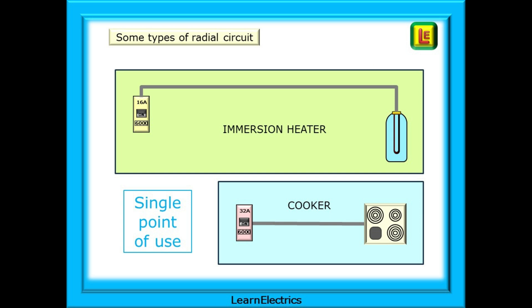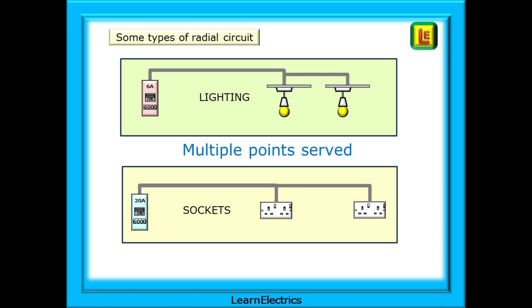An immersion heater circuit is a good example of a radial circuit. The wiring goes from its own breaker or fuse in the consumer unit directly to the immersion heater, as does the cooker circuit. These circuits go to one point of use and stop. The simple lighting circuit and socket circuit are both radial circuits too, but this time they serve multiple points of use. When the last point is reached, the circuit stops.